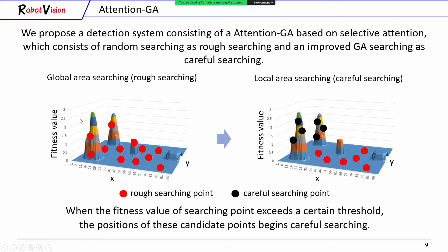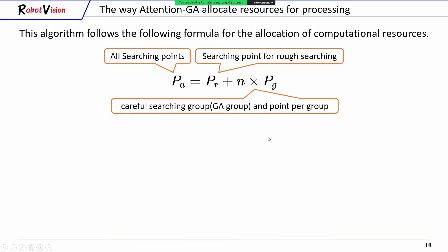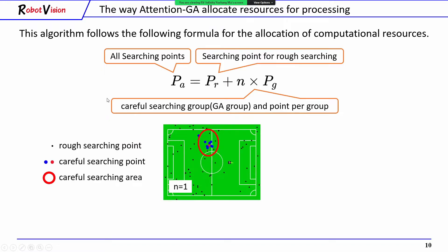When the fitness value of the searching point, like this red point, exceeds a threshold, the position of this candidate point begins careful searching, like this black point. This algorithm follows the following formula for the allocation of computational resources. Since the value of our searching point PA affects the overall value, when only a few groups of GA exist, like this picture, the searching system has high performance for finding a newly appearing target.